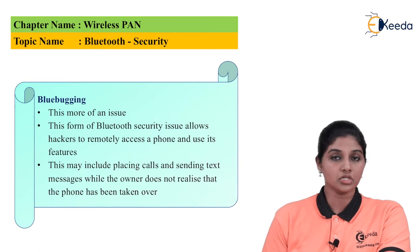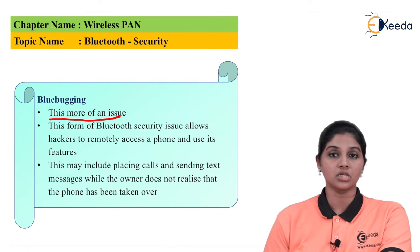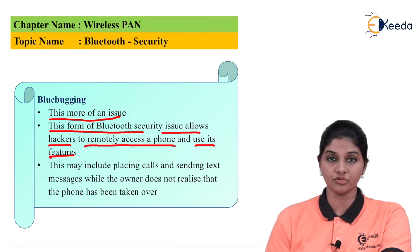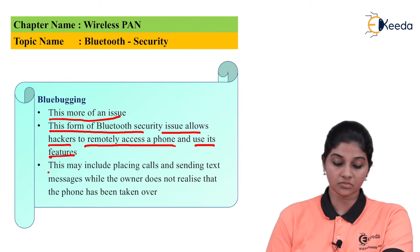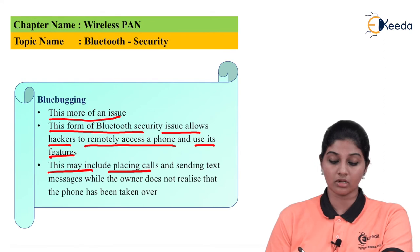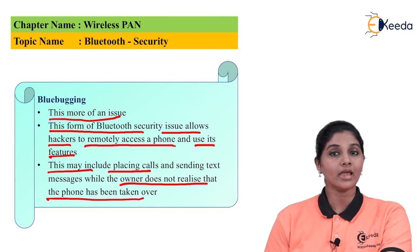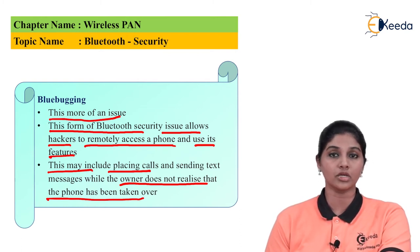The second type of security issue is bluebugging, which is considered a major issue. This form of Bluetooth attack allows hackers to remotely access the phone and use its features. This may include placing calls or sending text messages while the owner does not realize that the phone has been taken over.